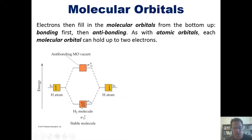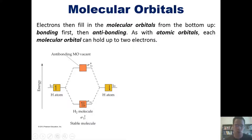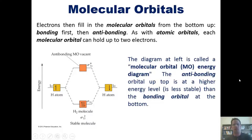Once the two hydrogen atoms overlap their atomic orbitals, they form two new orbitals: a bonding orbital represented by the lower box and an anti-bonding orbital in the upper box. Because each hydrogen atom brought one electron, the final H₂ molecule has two total electrons. We fill those in from the bottom up — two electrons go into the bonding orbital. Thankfully, the anti-bonding orbital in this molecule remains empty.